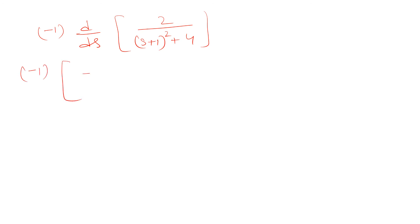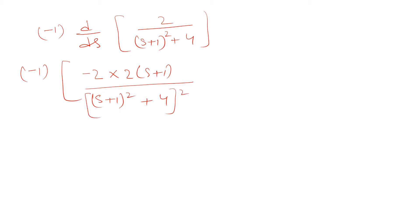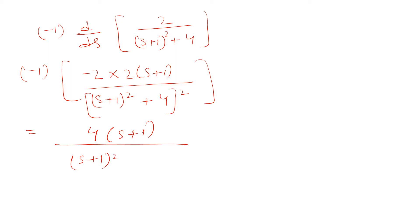Taking the derivative, we get negative 2 multiplied by 2 times (s+1), divided by (s+1)² plus 4, all squared. On simplifying, we get 4 times (s+1) divided by [(s+1)² plus 4] whole squared. This is our final answer.